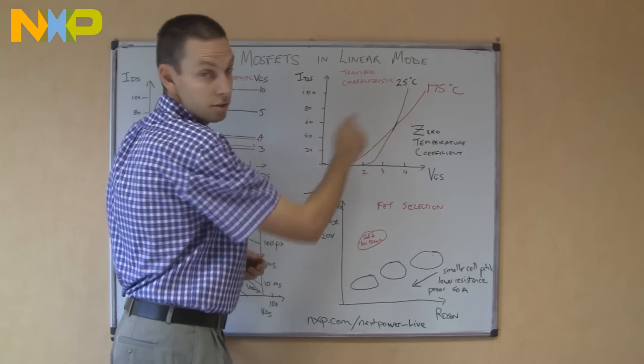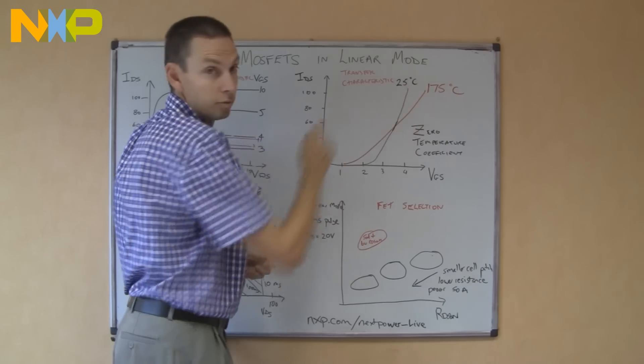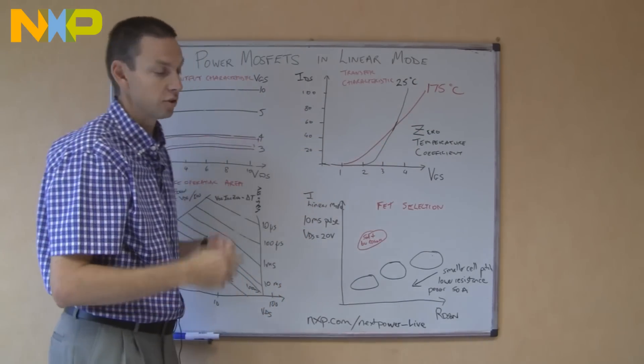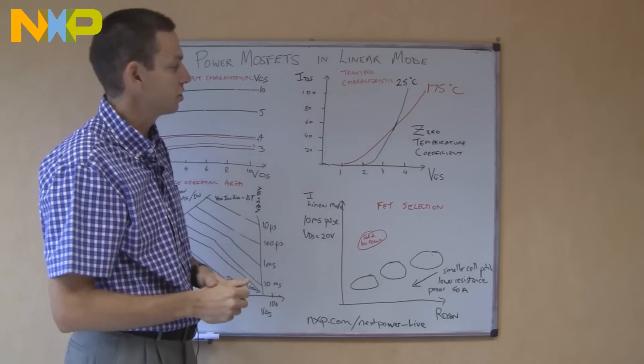Above a certain gate bias, when the MOSFET gets hotter, the inverse effect happens, and less current flows. If you're operating up in this top right-hand corner, there's no problem at all, because as your MOSFET gets hotter, the current will drop, and the power dissipation will drop. It's quite a safe situation.